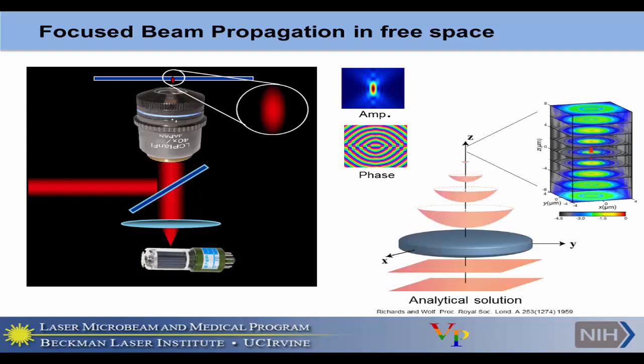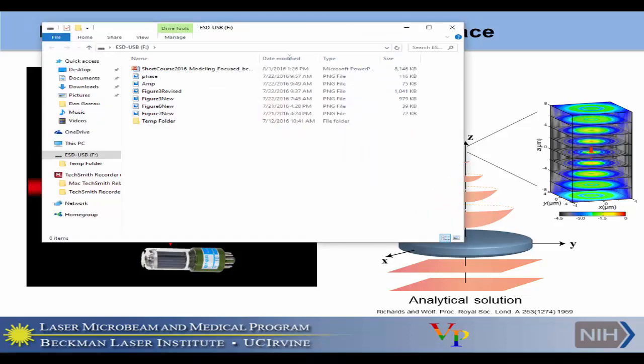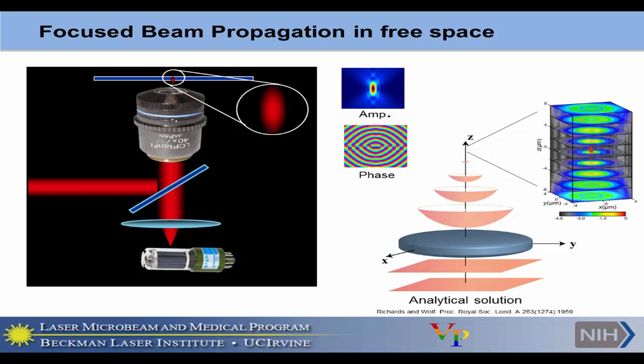We can model this using an analytical solution. We consider the incident beam as a plane wave incident upon a lens, which produces a converging spherical wave propagating toward the focus. Using that analytical equation, we can model the beam slice by slice, and obtain the electric field distribution at any location in this focal volume.